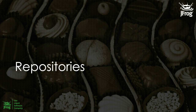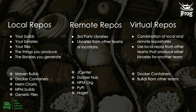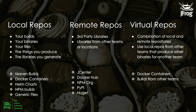In Artifactory we have repository types. We support 27 package types natively, logically separated into: local repositories — where you store your own binaries and builds, the things you own; remote repositories — lazy cache proxies of third-party repositories, in this case proxying NuGet gallery; and virtual repositories — a combination of local and remote that lets you encapsulate your SDLC into one standard repository.